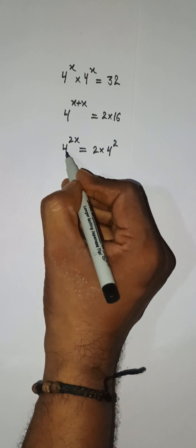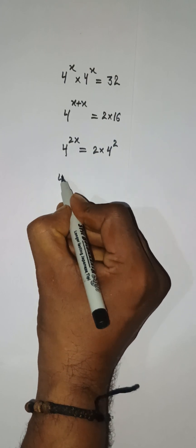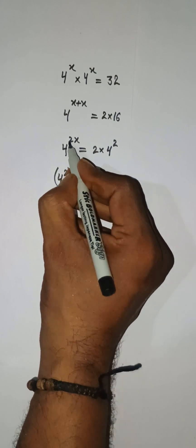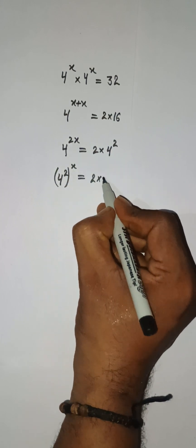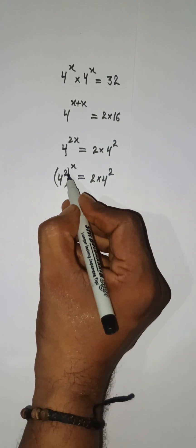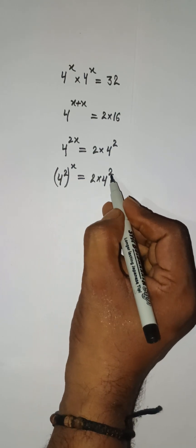So you can see here we have 4 to the power 2x. That can be written as 4 to the power 2 and power x. Because these ones are multiplied together, we have 2 multiplied by 4 to the power 2. So you can see that here we have 4 to the power 2 with power x, and here we have only 4 to the power 2.